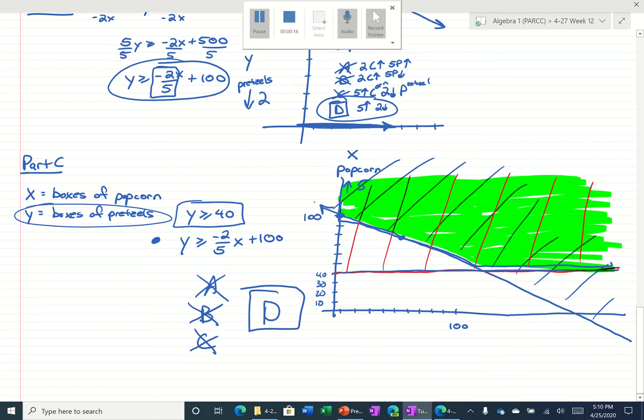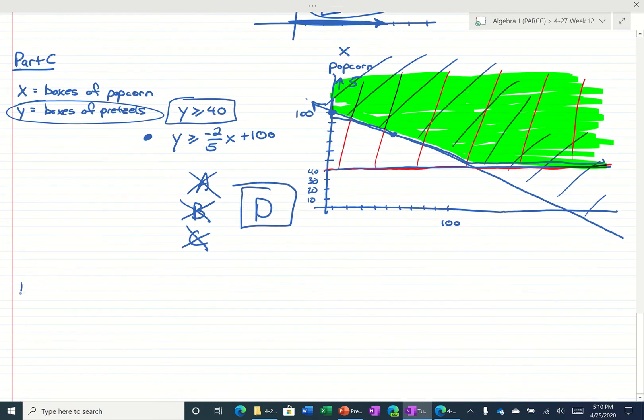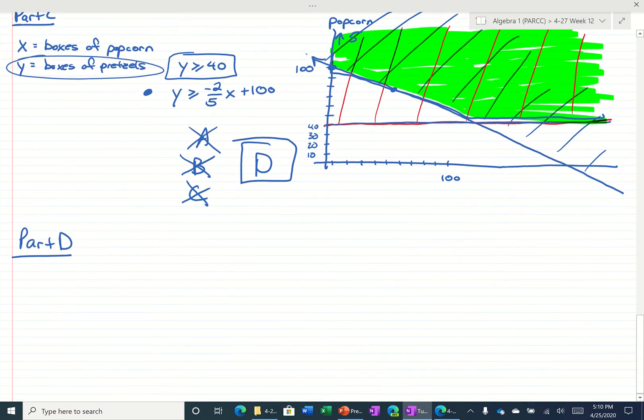Alright, so for Part D, that's what we're on now. It's asking you, what combination of boxes of popcorn and pretzels sold will the team meet the goal of earning at least $500? Select all that applies.